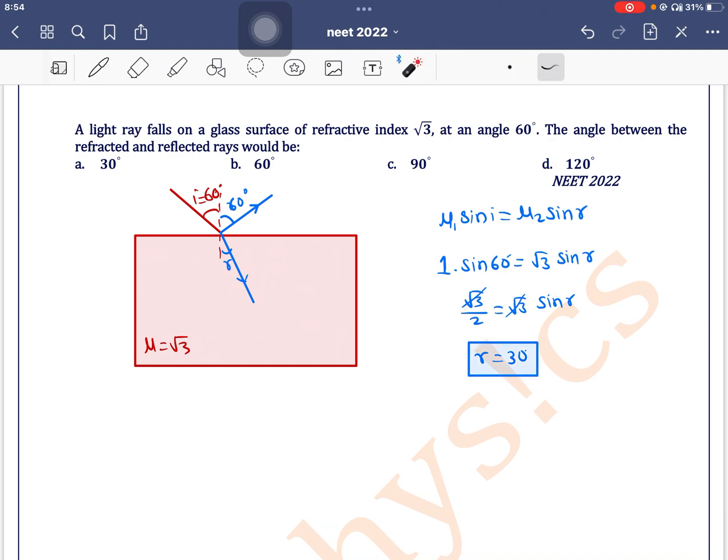Now we need to find the angle between the reflected and refracted rays. Let's call this angle θ. We can write: 60° + θ + r = 180°. Since r = 30°, we get θ = 90°. Therefore, option C is the correct answer.